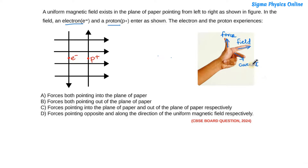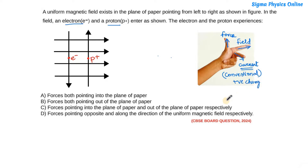Now, you need to remember that the current we consider here is the conventional current — that is, the current due to the flow of positive charges, meaning the direction in which positive charges move from the positive terminal to the negative terminal is taken as the direction of conventional current.